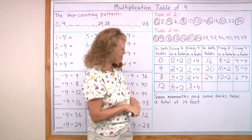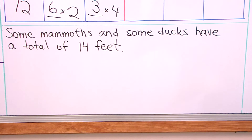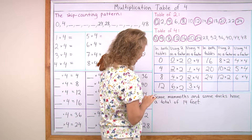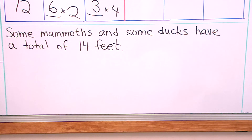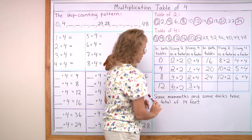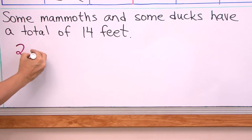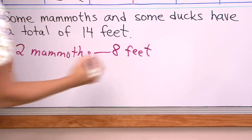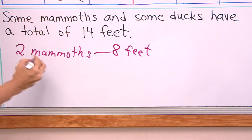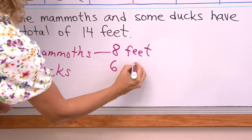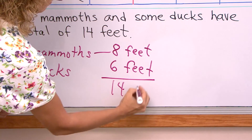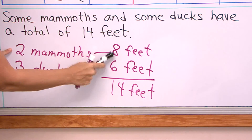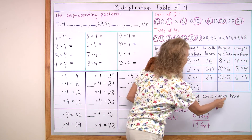And lastly, we have just one word problem to solve. Some mammoths and some ducks are walking somewhere and they have a total of 14 feet. How many mammoths and how many ducks are there? Think about it. It says 'some mammoths, some ducks' — so we can't use just one of either. Let's say it was two mammoths — those would have 8 feet, right? And then the ducks need to have 6 feet, so we would have a total of 14, which would make 3 ducks. Now, could we have 3 mammoths? 3 mammoths would have 12 feet, and then we would only have 1 duck — so that doesn't work because it says ducks, plural.